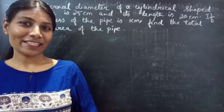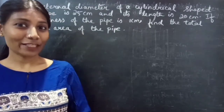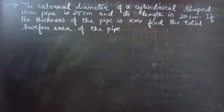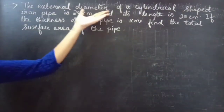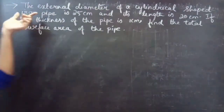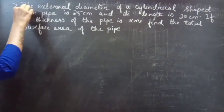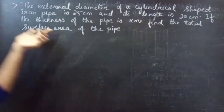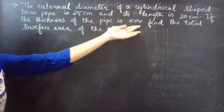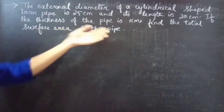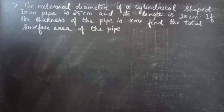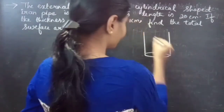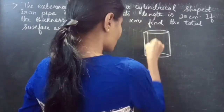Hello everyone, this is Zekalpana here. In this video we are going to find the total surface area of a pipe from a mensuration problem. The external diameter of a cylindrical shaped iron pipe is 25 centimeters and its length is 20 centimeters. If the thickness of the pipe is 1 centimeter, find the total surface area of the pipe.